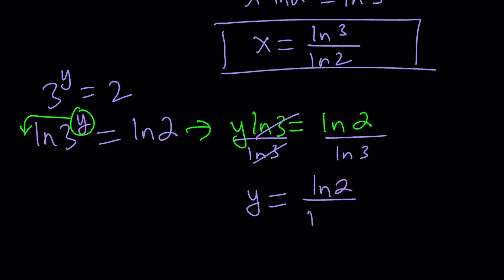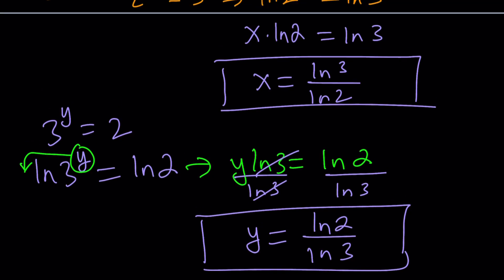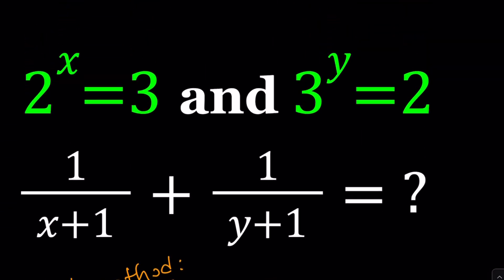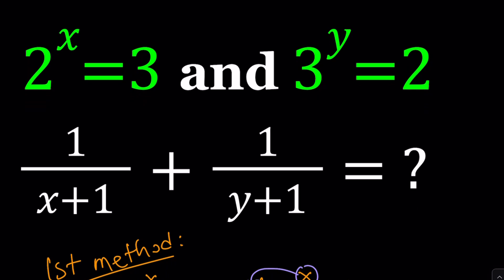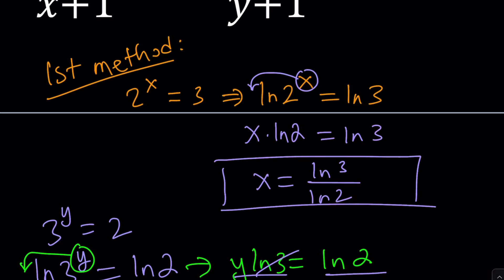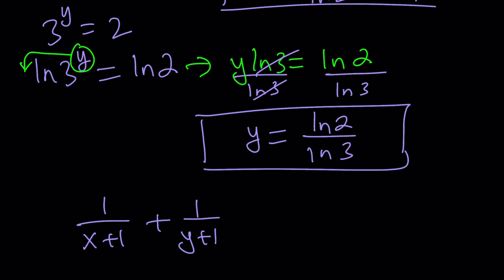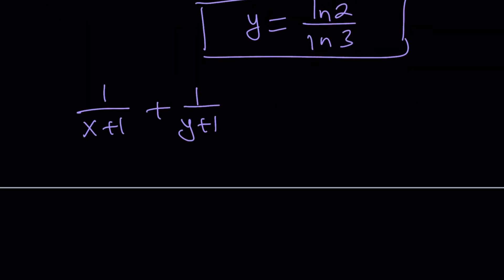Have you noticed something about x and y? I hope you did. They are reciprocals — yes. Is that going to help? Definitely. That probably gives us another alternative method, maybe a 1b. But let's see how this plays out with 1a first. So let's go ahead and plug in. We have 1 over x plus 1, plus 1 over y plus 1. We're going to replace x with ln 3 over ln 2.